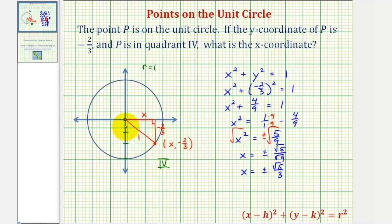So we have x equals plus or minus the square root of five divided by three. But because we're in the fourth quadrant where x-coordinates are positive, we only use the positive solution here, so the x-coordinate would be positive square root of five divided by three.